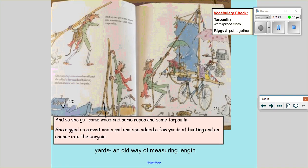Page 20 we are starting from. And so she got some wood and some ropes and some tarpaulin. She rigged up her mast and a sail and she added a few yards of bunting and an anchor into the bargain.